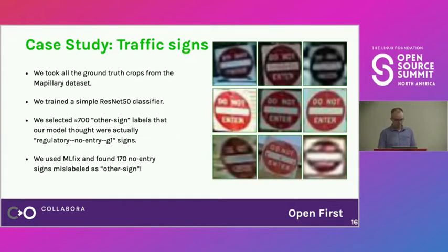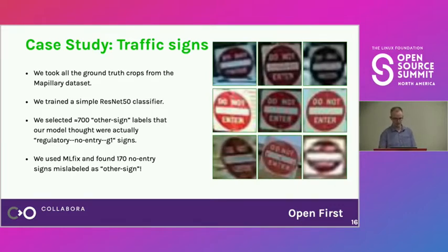This is going to confuse the model. With so many examples in such a large class, the model doesn't know whether to predict "other sign" or "regulatory no entry" — it will make mistakes statistically. I think this confirms it's a serious issue, and even with a lot of resources put into a high-quality dataset, errors still appear.